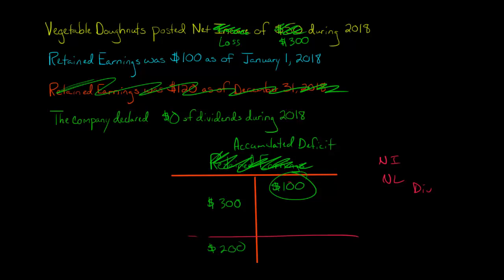Now let's say next period, they have net income of $500, and no dividends. Dividends are zero. This is next period now. I hope I'm not confusing you.